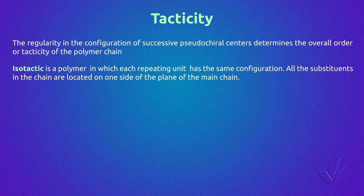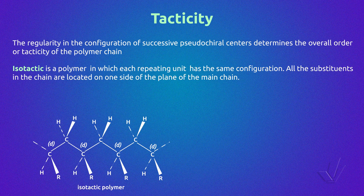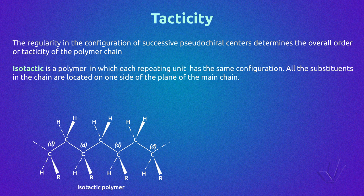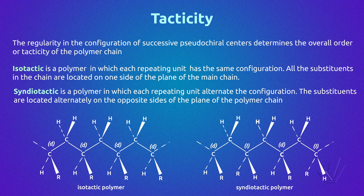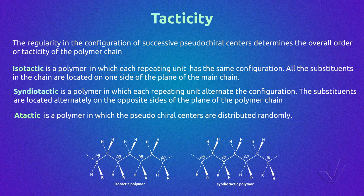Isotactic is a polymer in which each repeating unit has the same configuration — all the substituents in the chain are located on one side of the plane of the main chain. Syndiotactic is a polymer in which each repeating unit alternates the configuration; the substituents are located alternately on opposite sides of the plane of the polymer chain. Atactic is a polymer in which the pseudo-chiral centers are distributed randomly.